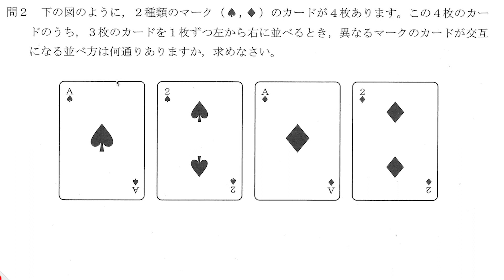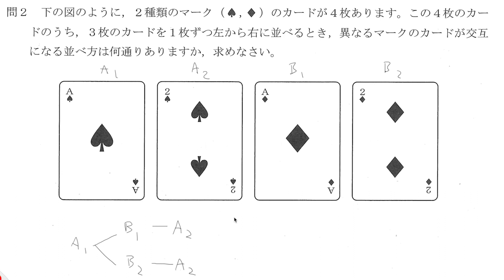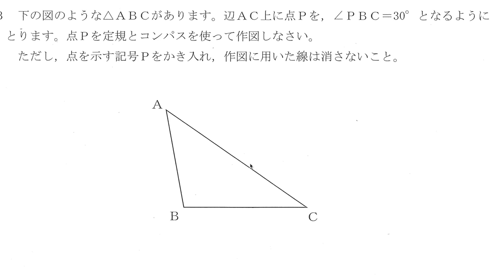スペードのエースと2、ダイヤのエースと2があります。A1、A2、B1、B2と呼ぶことにして、樹形図で解きましょう。A1から始める場合、A2は使えないのでB1かB2があります。Bの次にまたBは来れないので、残りはA2が来るはずです。A1から始めた場合に2通りあります。これは4枚のうちどれについても同様なので、2が4つ — つまり8通りあると考えられます。